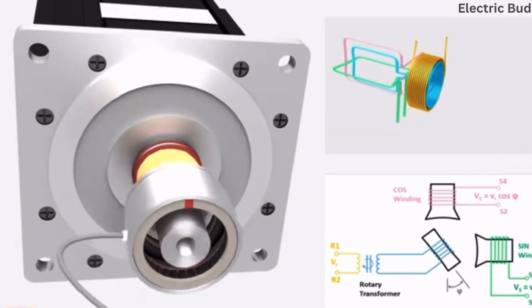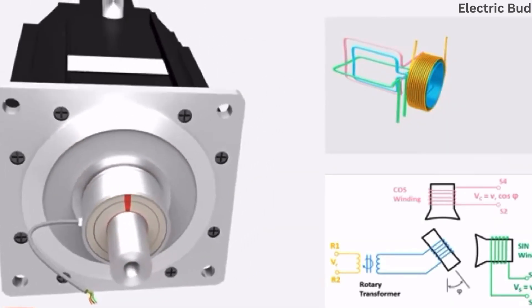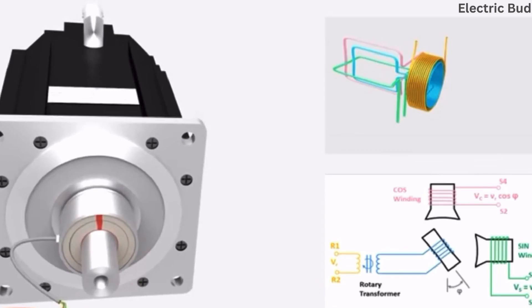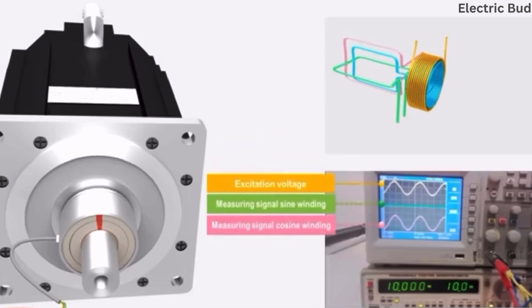So let's mount this resolver to the motor shaft and apply a high frequency sine signal to the stator primary winding. The pulsating alternating magnetic field of the rotor winding now induces an alternating voltage in the measuring windings — sine